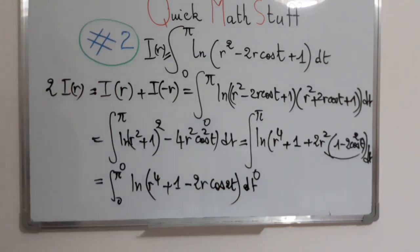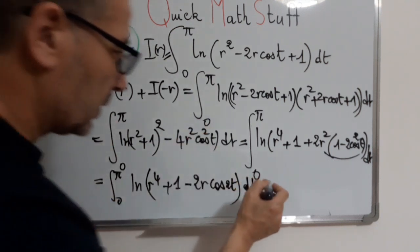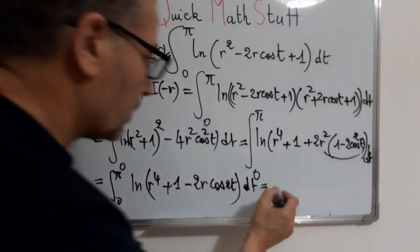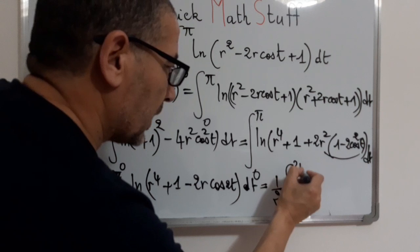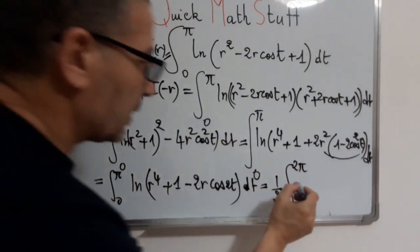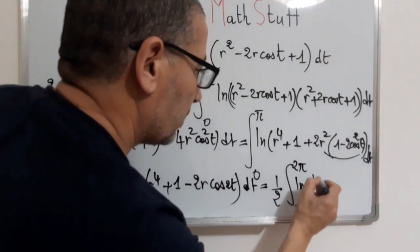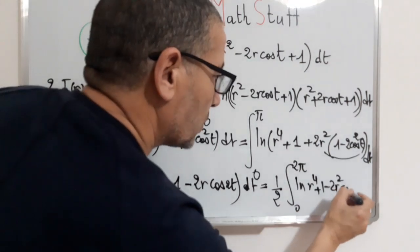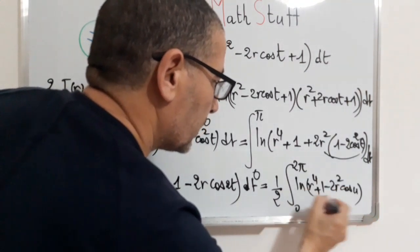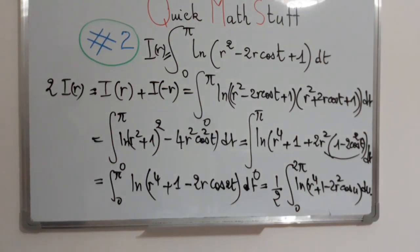Now, variable change 2t equals u. This will give 1 over 2 times integral from 0 to 2π of ln of r to the fourth plus 1 minus 2r squared cos u du. Please take a few moments to find a convenient relation.